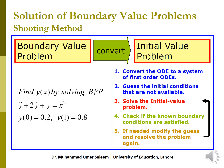The solution of a boundary value problem by the shooting method proceeds as follows: we convert the boundary value problem into an initial value problem. Since it is a second order equation, it is converted into a system of first order differential equations. For example, this second order equation is converted into two first order ordinary differential equations.